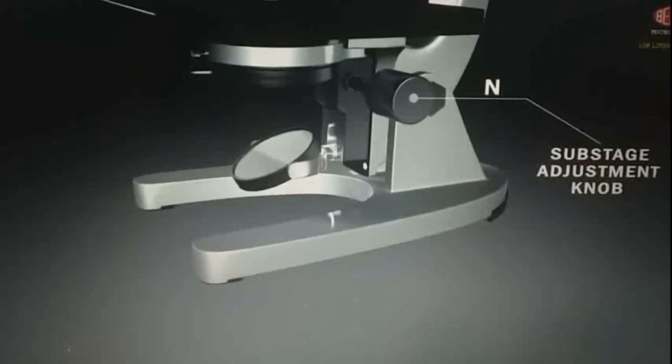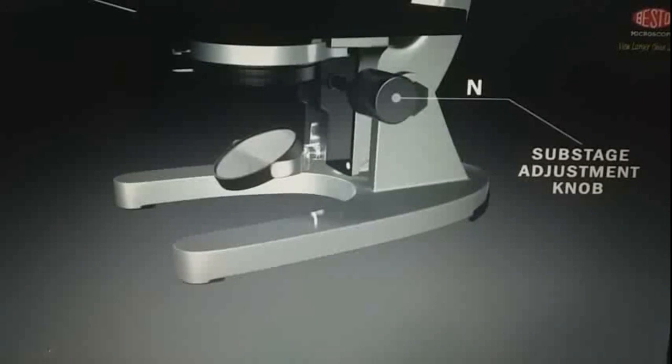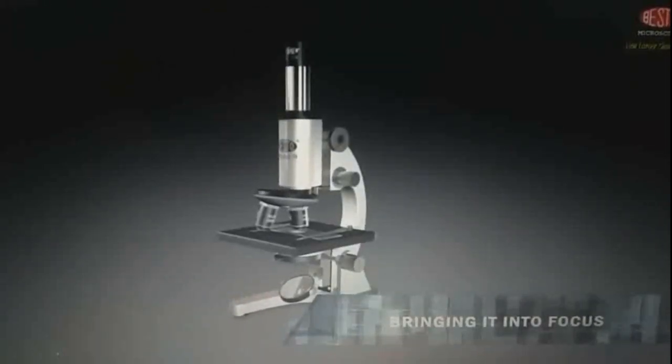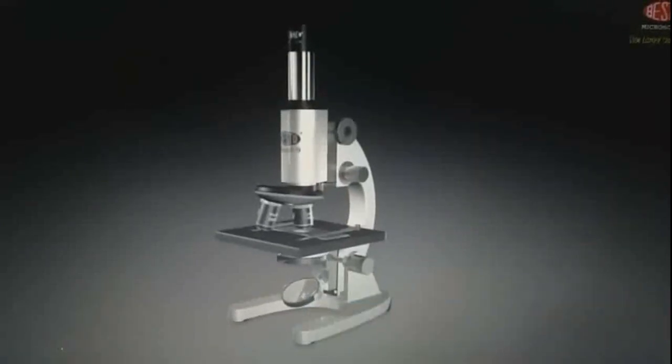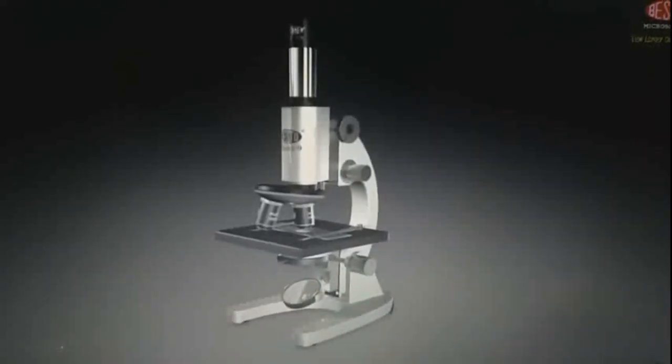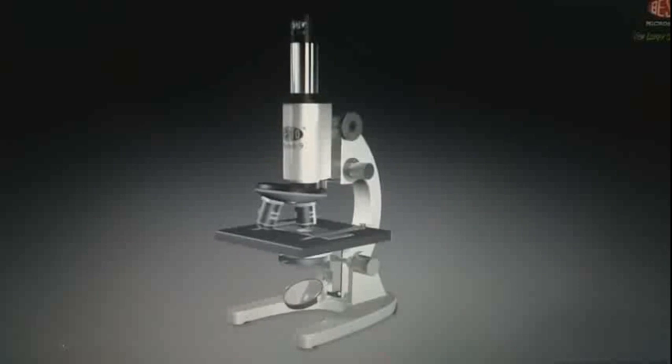And, sub-stage adjustment knob. It is used to move condenser up and down. Now, I will teach you how to adjust the microscope. For adjusting the microscope, you have to follow few instructions.